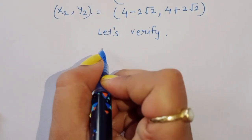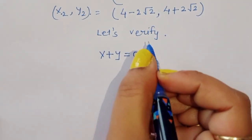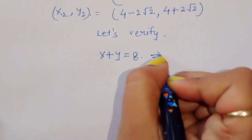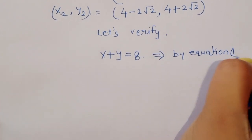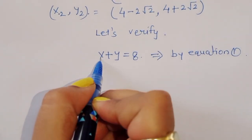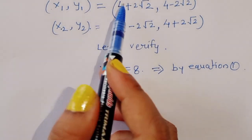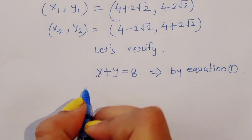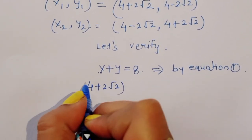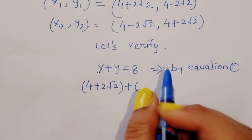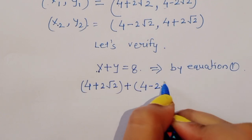Verifying with equation 1: x plus y is equal to 8. Taking x1 and y1: (4 plus 2 root 2) plus (4 minus 2 root 2).